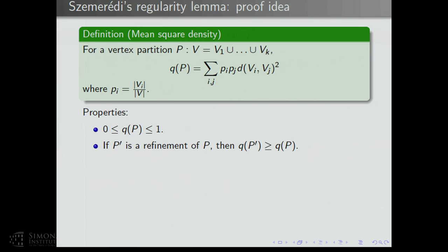This function has some nice properties. First, it's always between 0 and 1, since it's an average of numbers between 0 and 1. Second, if you take a refinement of a partition P, the mean square density can only stay the same or go up — it can't go down. This follows from the Cauchy-Schwarz inequality.